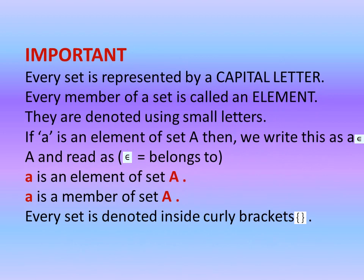The important things to note while writing a set. Every set is represented by a capital letter. Every member of a set is called an element. They are denoted using small letters. If a is an element of set A, then we write this as a ∈ A and read as a is an element of set A, a is a member of set A. Every set is denoted inside curly brackets. The new symbol is belongs to ∈ which looks like the English alphabet capital letter E.